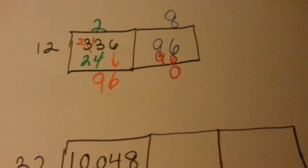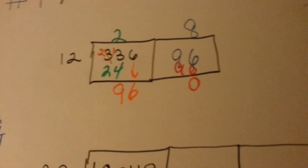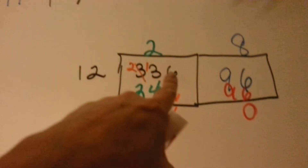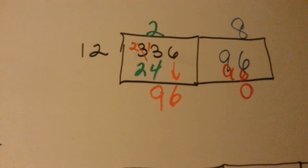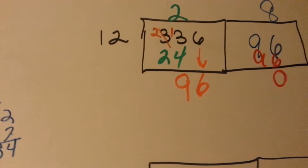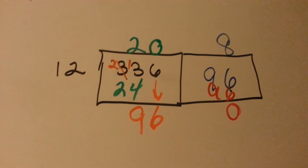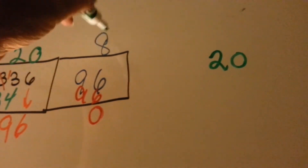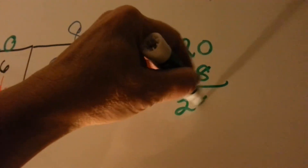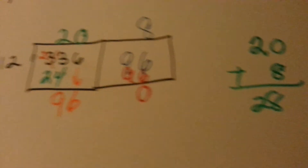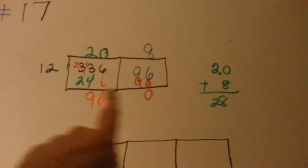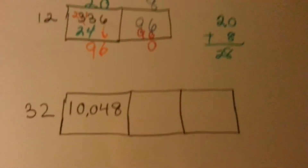We do the subtraction and it's got 0 left over. And then see this empty space up here? That's where another 0 goes. So now on the side you can say 20 plus this 8 is 28. And that's how many times 12 goes into 336 — 28 times.